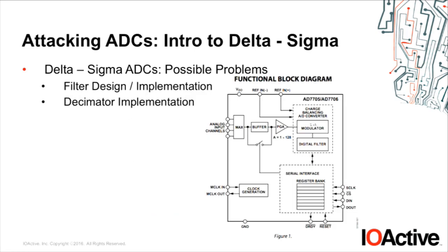This is the functional diagram of the Delta Sigma ADC we're going to attack: the AD7706. We can see the modulator and the digital filter, and the PGA — the programmable gain amplifier — which is a feature of the ADC. If you are trying to sample very weak signals, you can amplify the signal. It has a number of gains you can set, which helps you get a better resolution because it amplifies the signal and either changes the cutoff or the different filters. This is the setup we have for this attack: we use the Picoscope to generate signals, interfacing with the ADC, and here you have the AD7706.